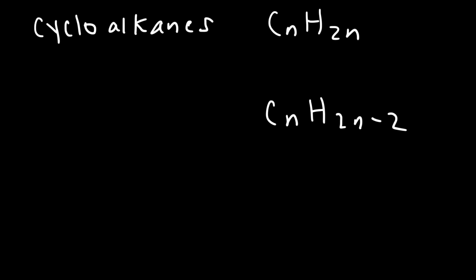It turns out that cycloalkanes also have the same formula CnH2n if they have one ring. If they have two rings, then it's CnH2n minus 2. So just keep that in mind. This is for one ring, and this is if they have two rings.